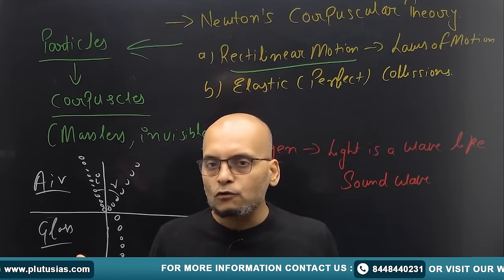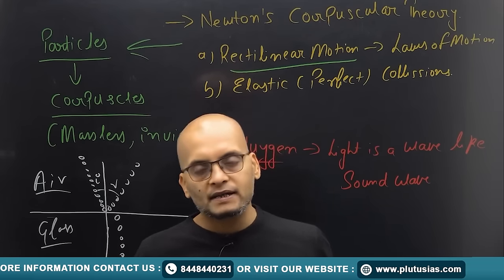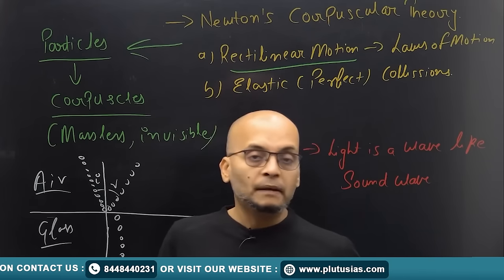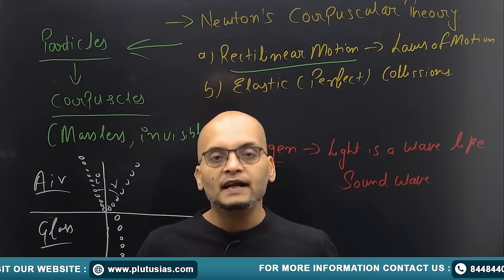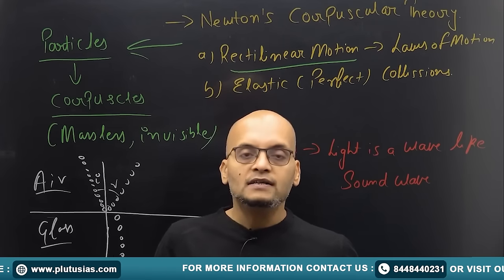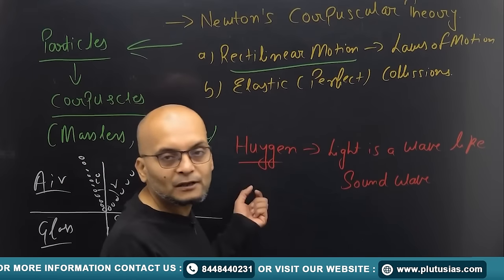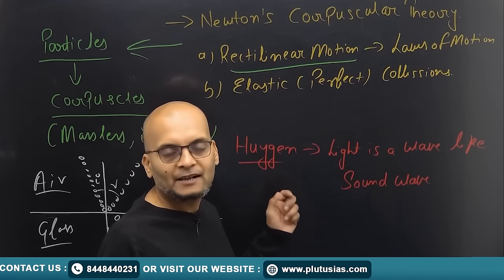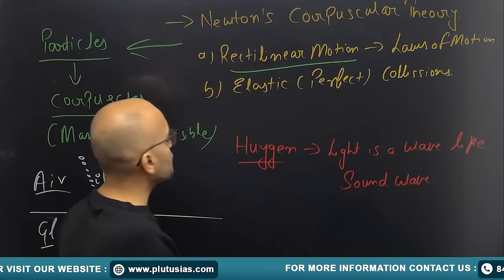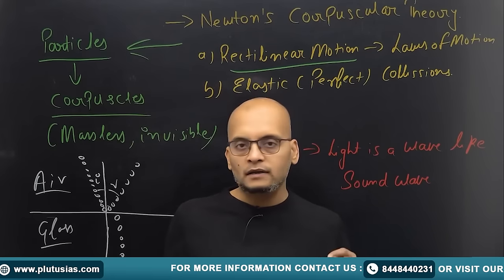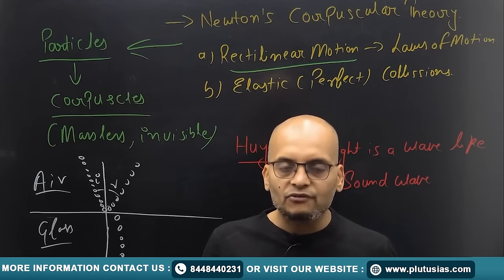Since the theory was propounded by Sir Isaac Newton, it gained a huge amount of popularity and people started believing that light is made up of particles called corpuscles. But at the same time, there was a contemporary of Newton — a Dutch scientist — whose name was Christiaan Huygens.